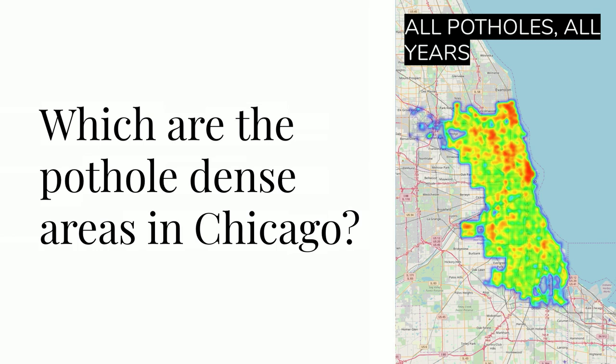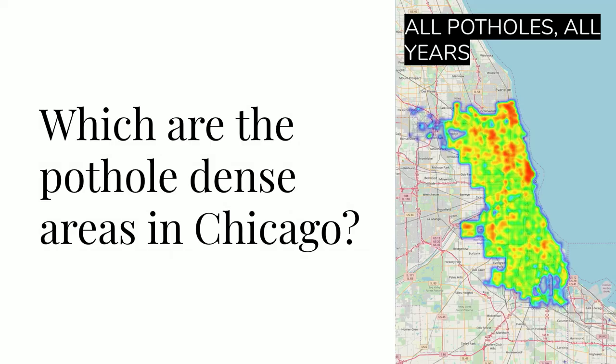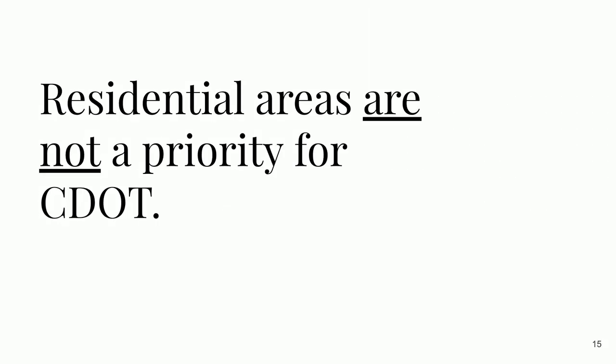Where are the potholes in Chicago? On the heat map, there are a lot near the loop, but also a lot by highway exits and areas with heavy vehicles like bus stops and industrial areas. If you look at the heat map, the potholes are really scattered. If you look at the top where I-90 is — they're by highway exits, but another reason is pothole politics. Residential areas are not a priority for CDOT when they're deciding which potholes get filled.